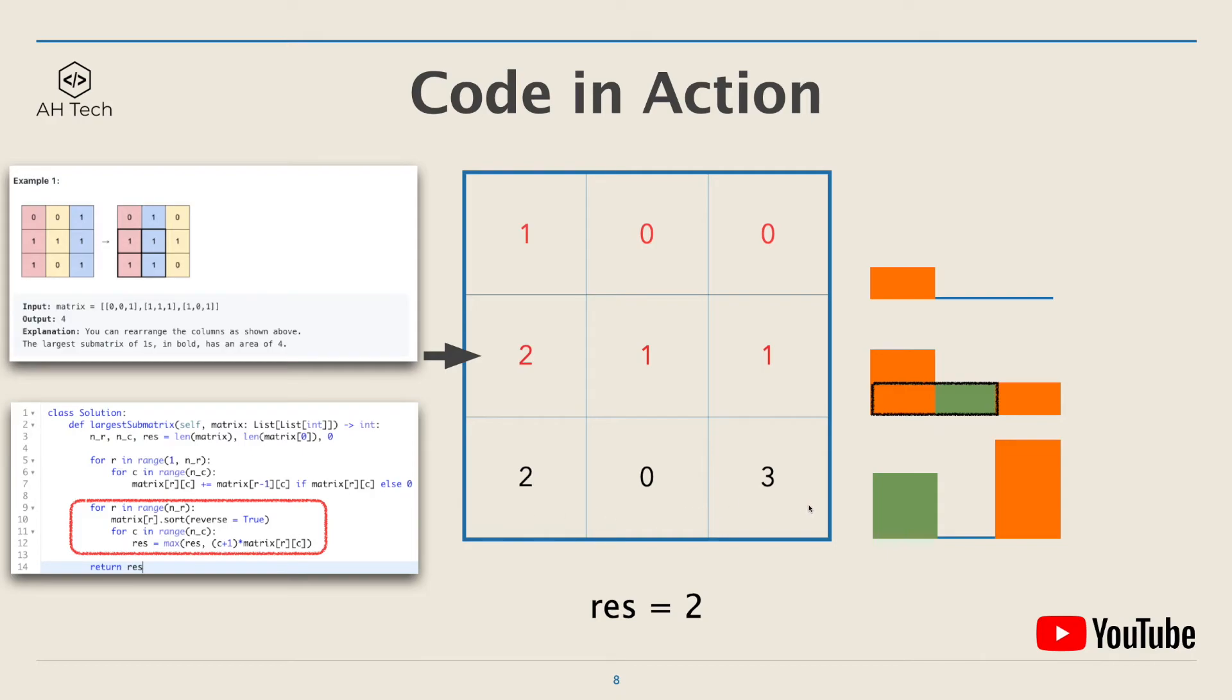And in the third row, you can kind of see that why we need to reverse sort each row is because we have to connect the bars in the histogram in order to form the biggest rectangle. And in the third row, the largest rectangle, its width is 2 and its height is 2. So the largest area is 4. And this is also the final output of this example.